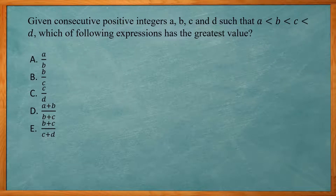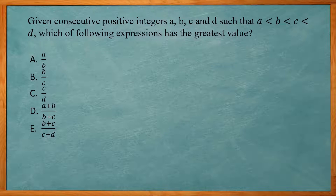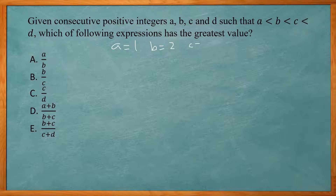This one reads: given consecutive positive integers A, B, C, and D such that A is less than B, B is less than C, and C is less than D, which of the following expressions has the greatest value? I'll set A equal to 1, B equal to 2, C equal to 3, and D equal to 4.